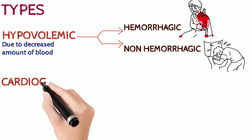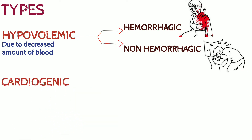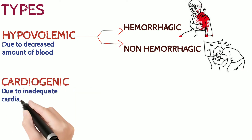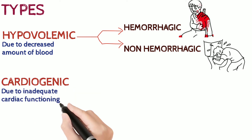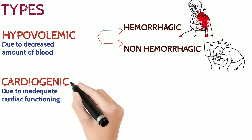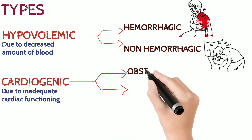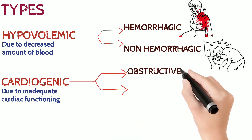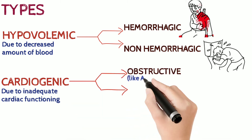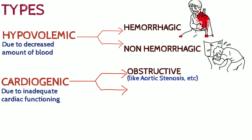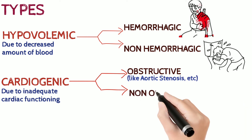The second type is cardiogenic shock, which occurs due to inadequate cardiac functioning and is classified into two types: obstructive type and non-obstructive type.